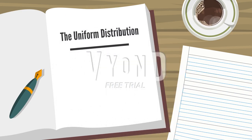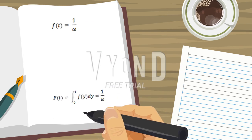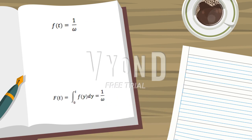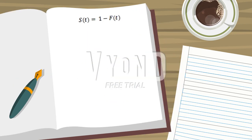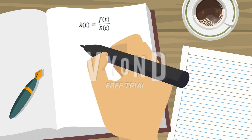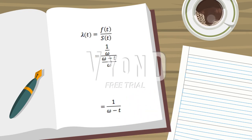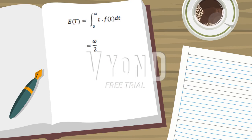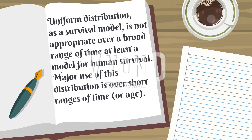I will introduce the properties of uniform distribution. The PDF: small f(t) is equal to 1 over omega. Capital F(t) equals the integral of small f(t) from 0 to t, which equals t over omega. S(t) equals 1 minus capital F(t), which equals omega minus t over omega. The hazard rate h(t) equals small f(t) over s(t), which after simplification equals 1 over omega minus t. The expected value of T equals omega over 2, and the variance of T equals omega squared over 12. Uniform distribution as a survival model is not appropriate over a broad range of time, at least as a model for human survival. Its major use is over short ranges of time or age.